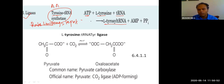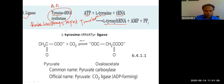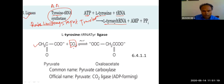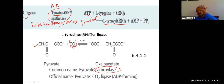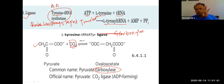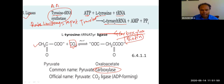The second important ligase reaction involves carbon dioxide addition. Carboxylases add CO2 to molecules. There are only four carboxylases in our body, and they are all very important. These carboxylases utilize biotin as a cofactor in addition to ATP to add a carboxyl group to a substrate.